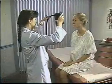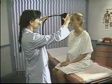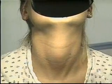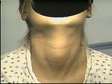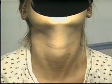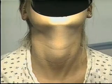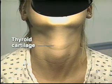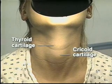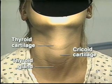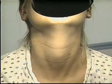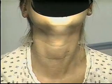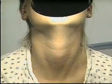Next, inspect the thyroid. To do this, light the patient's neck tangentially from above. Ask the patient to sip some water, extend her neck back slightly, and swallow. Observe for upward movement of the thyroid gland, noting its contour and symmetry. Identify the thyroid cartilage, the cricoid cartilage, and the location of the thyroid gland. Watch as the thyroid cartilage, cricoid cartilage, and thyroid gland all rise with swallowing.